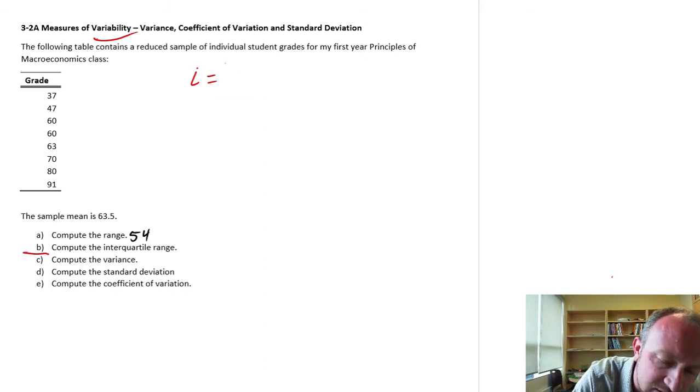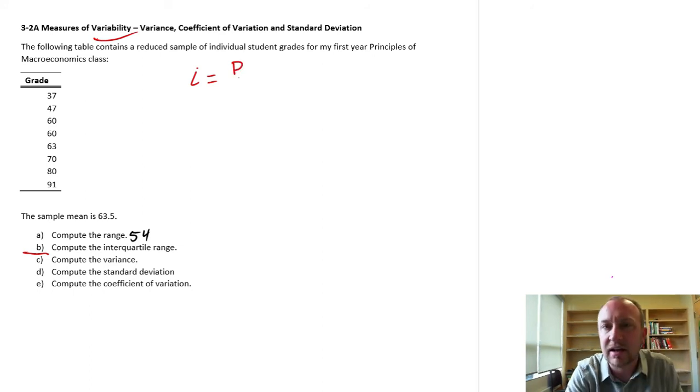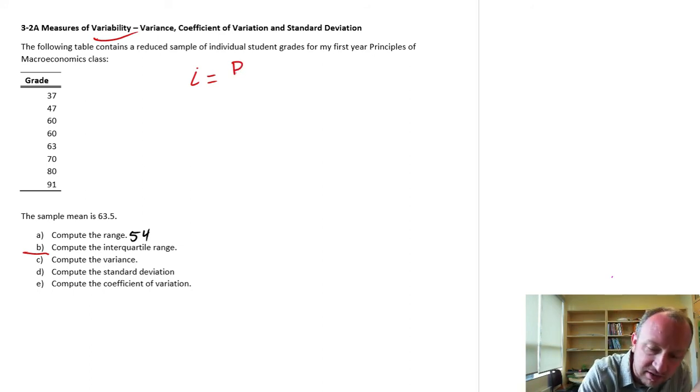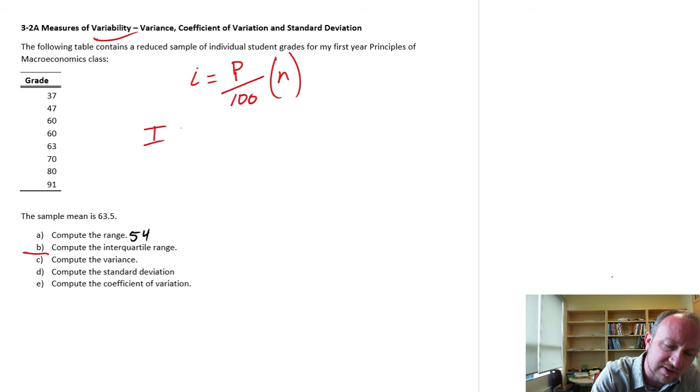So the index value is calculated as the percentile of interest. In this case, we're looking at quartiles, so that's 25th percentile, 50th percentile, and 75th percentile. So the formula is the percentile of interest over 100 times our sample size. So if we're looking at wanting to calculate the interquartile range, let's just abbreviate that as the IQR. This is simply the difference between the third quartile and the first quartile: IQR = Q3 - Q1.